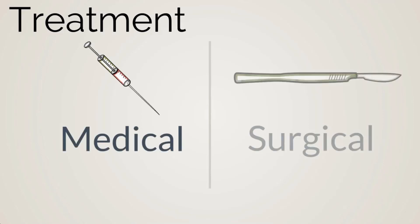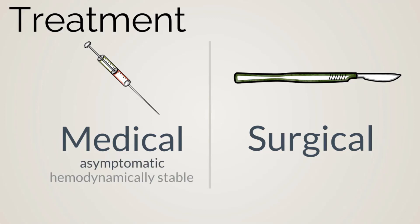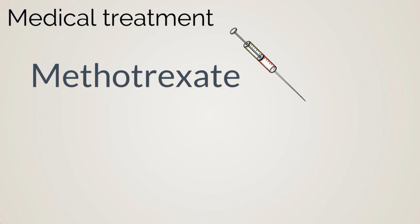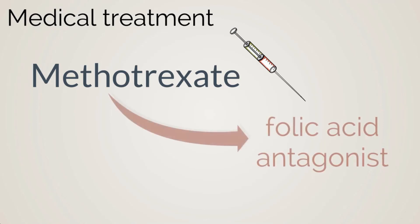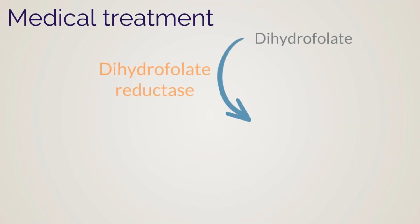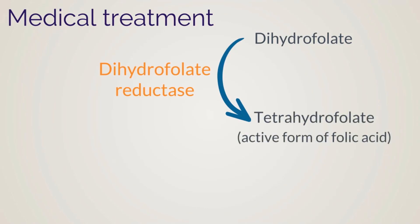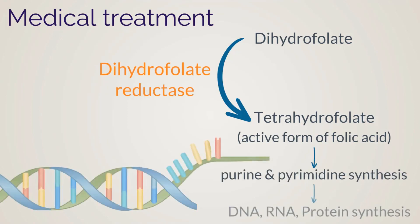Treatment of ectopic pregnancy can be medical or surgical. Candidates for medical treatment include women that are asymptomatic, hemodynamically stable, and compliant with care, as follow-up with beta-HCG levels is necessary. Methotrexate has been traditionally used for medical treatment. Methotrexate is a folic acid antagonist. Normally, the enzyme dihydrofolate reductase converts dihydrofolate to tetrahydrofolate — the active form of folic acid — which is critical to the synthesis of purines and pyrimidines in dividing cells, allowing for DNA, RNA, and protein synthesis.